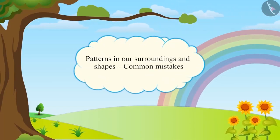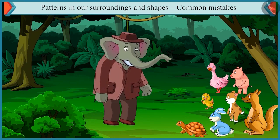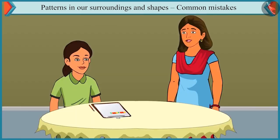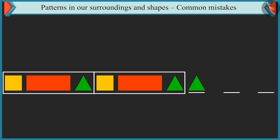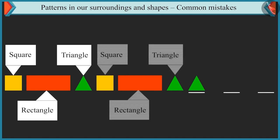Patterns in our surroundings and shapes — Common Mistakes. Friends, in this video we will see some common mistakes that we make while identifying the pattern made from the shapes. Chutki, come on, let's see some more patterns today. You will have to identify them and build them further. You have to identify this pattern and build it further. The square, rectangle, and triangle — these three shapes are repeated in one order in this pattern.